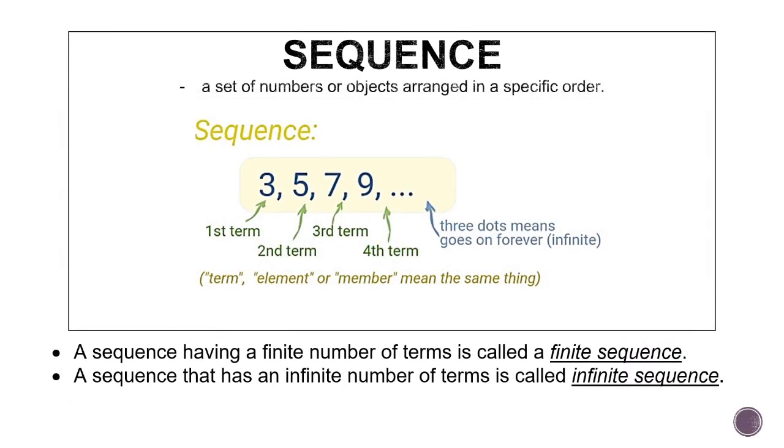Before we proceed to the solving part, let's define what a sequence is first. A sequence is a set of numbers or objects arranged in a specific order. So this is simply a list of anything that has an arrangement. In this example, 3, 5, 7, 9, it is so obvious that for you to get the next number, you just have to add 2. We call these numbers terms or elements.